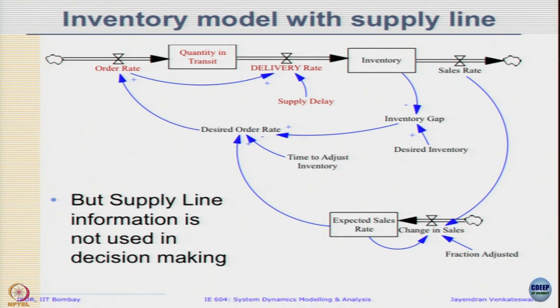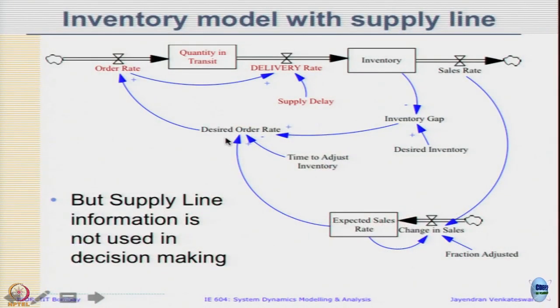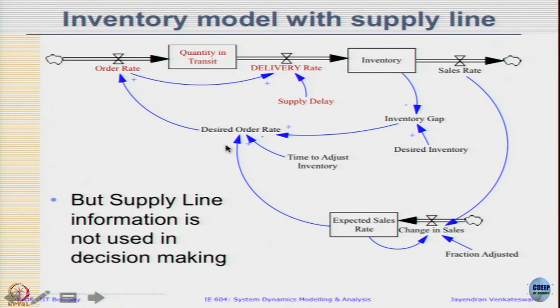The first step is to figure out how to account for the supply line in our decision making. What I mean by supply line is the one shown in red — after things are ordered, after some supply delay, things are getting delivered. Until then the quantity remains in transit. This is what is physically happening; we have captured that in the physical aspect, but in decision making you can find that none of that information is actually feeding into the desired order rate.